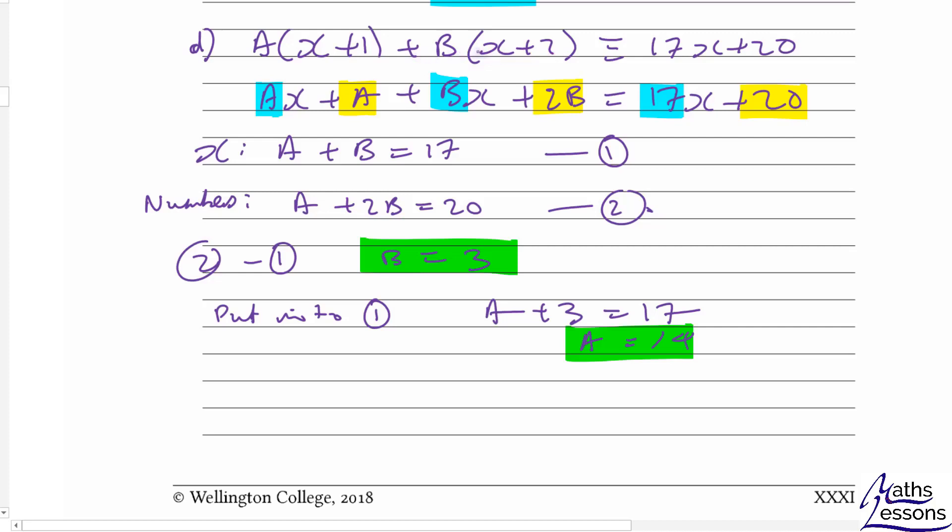So if we let x equal minus 2, we get a open brackets minus 2 plus 1, and b minus 2 plus 2, and that's going to equal 17 times minus 2 plus 20. So we've got minus a, minus 1 plus 0 will equal minus 34 plus 20 which is minus 14. You can see a equals 14, exactly the same answer as we did before.